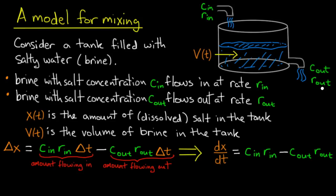Well, we multiply by Δt. So the total amount of salt that flows in over that small time interval Δt is C_in times r_in times Δt, and we subtract the total amount that flowed out during that time interval, which is C_out times r_out times Δt.